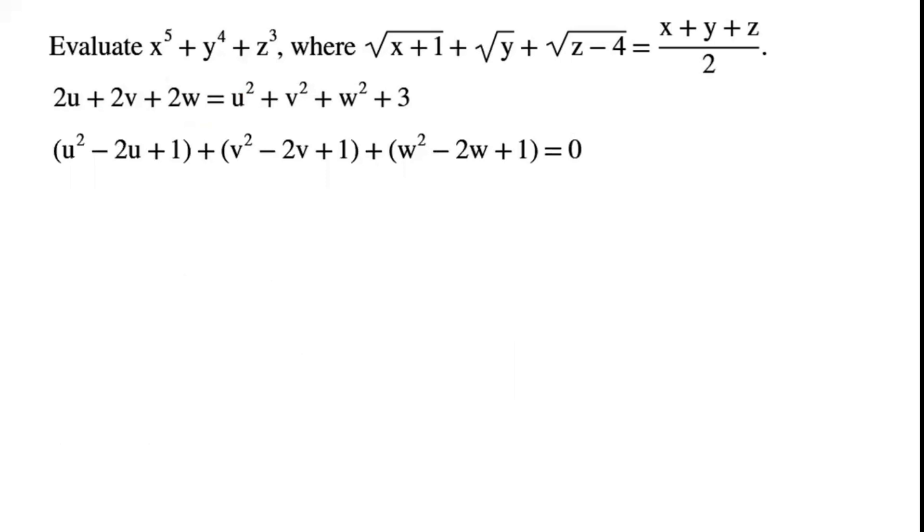Now we rearrange the equation and group the terms by writing terms with the same variable as one group. There is a constant term which we write as 1, 1, and 1 in each of the three groups. So after this rearrangement, u squared minus 2u plus 1 plus v squared minus 2v plus 1 plus w squared minus 2w plus 1.